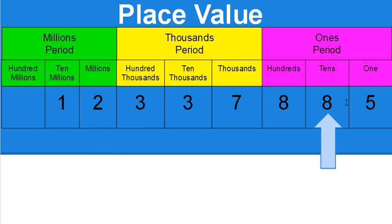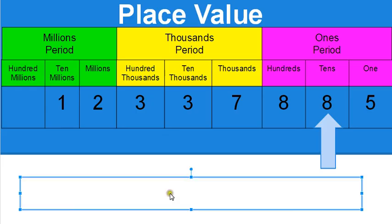This next one is the second digit over — ones, tens — and eight in the tens place means eight groups of ten, which is 80. There's one digit that comes after the tens place, so there's one zero: eight tens makes eighty.